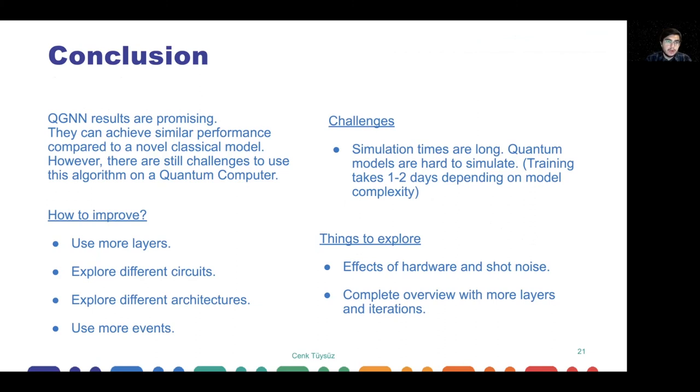Here we present some ways to improve this performance. To conclude, we show that our results are promising and can achieve similar performance to novel classical models, but there are still challenges. The biggest challenge is simulation times are very long, and access to real quantum hardware is very limited. This limits us from experimenting with these models. How we can improve this performance is we can use more layers, explore different circuits, and also different architectures. As something common to most neural network models, we can use more data to improve the performance. As things to explore, we haven't shown any hardware or shot noise effects in this work, and this is something to be explored. Also in the future, we can provide a more extensive overview with more layers and iterations.